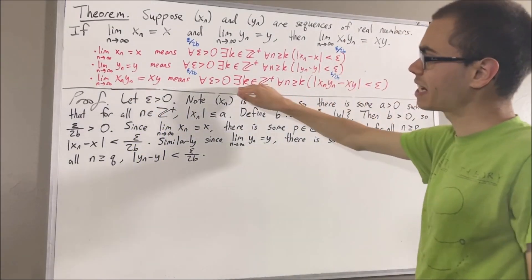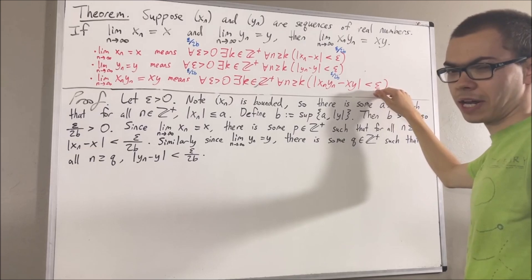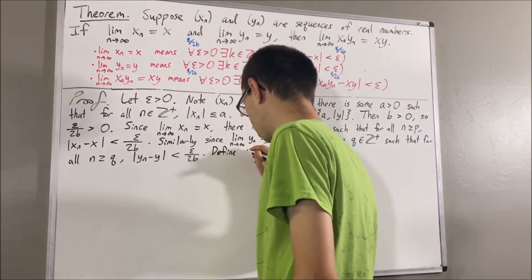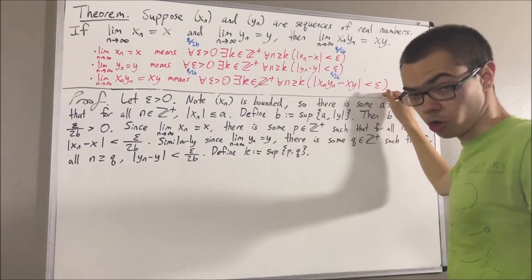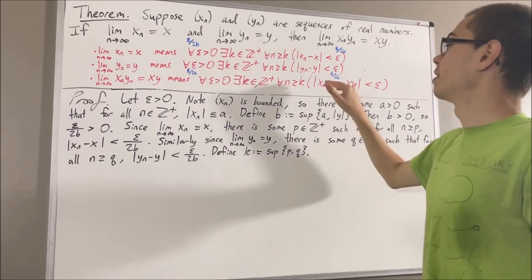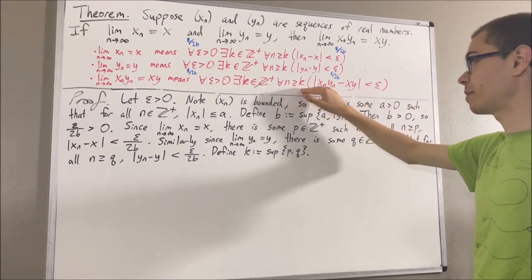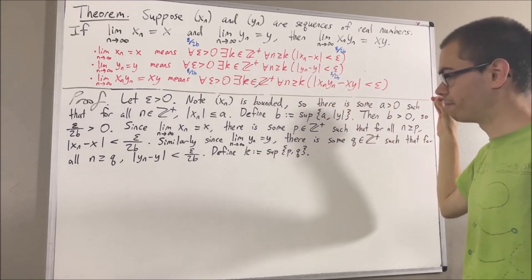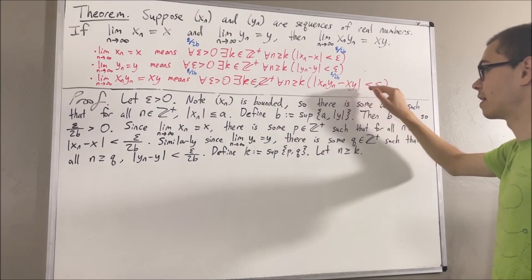Our whole goal has been to find a positive integer which makes this statement turn out true, and we're going to do that right now. We're going to take k to be the bigger of p and q, and we're going to show that this choice of k makes the statement turn out true. So we want to show for all positive integers n greater than or equal to k, the absolute value of xn yn minus xy is less than epsilon. Since we're trying to prove a statement about every positive integer greater than or equal to k, give me an arbitrary positive integer greater than or equal to k — I'll call it n. From here, we want to show that the absolute value of xn yn minus xy is less than epsilon.